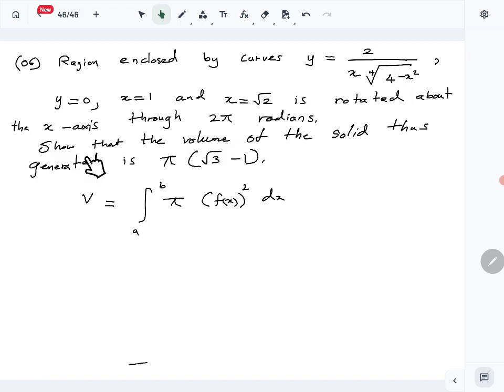Here the function is this one, and a and b—where y equals 0 is the x-axis—x equals 1 and x equals square root 2 are your integration limits. So a is 1, b is square root 2. Let's write all of them down.